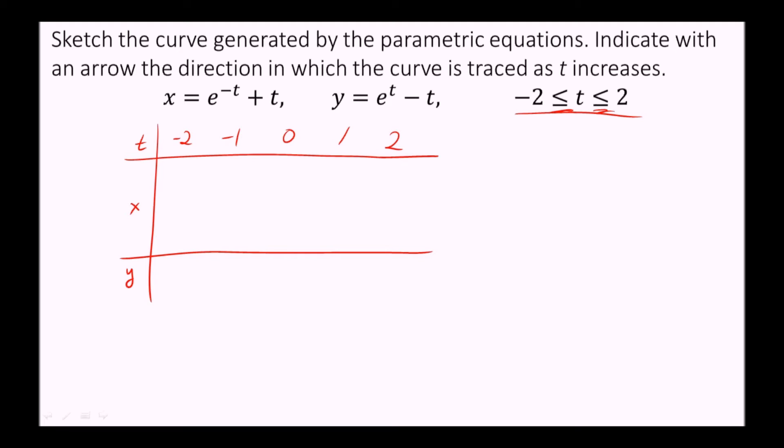It may be too few, usually not too many, but from these t values we'll plug them into our x and y equations and get values that we can then plot on an xy coordinate plane. So when t is negative two, we can plug in those t values into the x equation. We get e to the negative negative two, so e squared minus two.